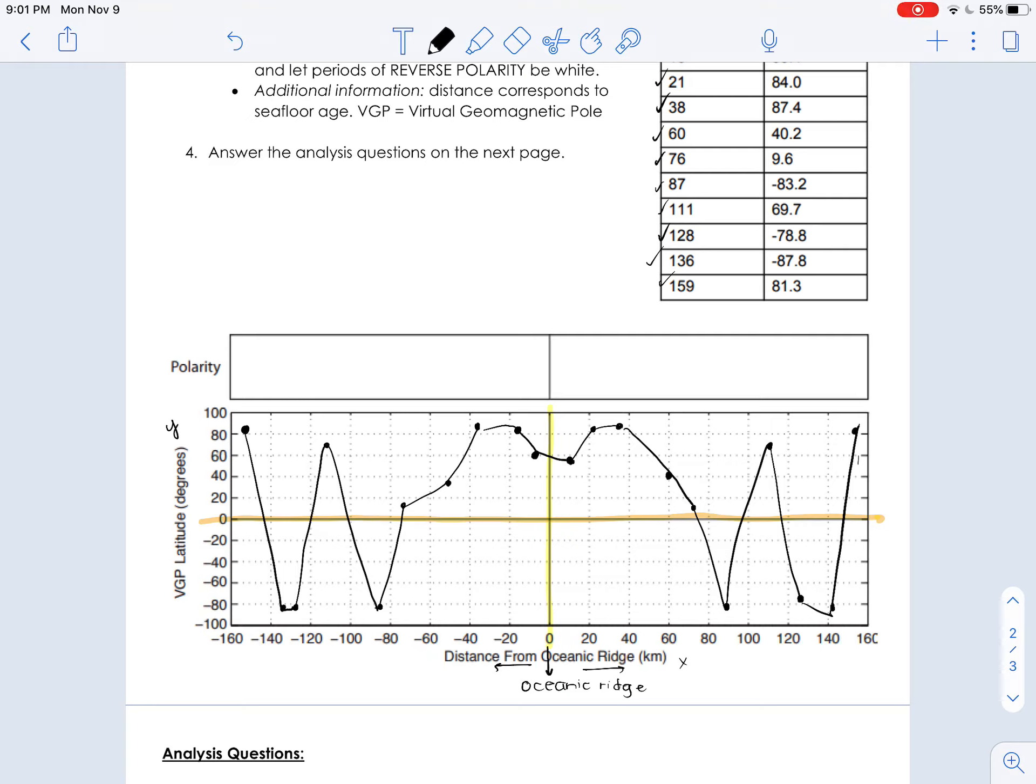So every time it is in a positive number, we are going to call this normal polarity. And when it's down here in the negative, we are going to call this reversed polarity. And what we are looking for is actually every single time our line graph crosses the orange zero line.